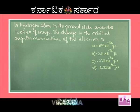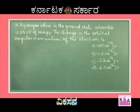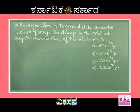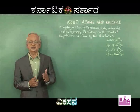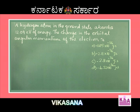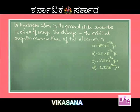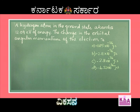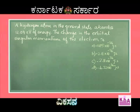Next problem: a hydrogen atom in the ground state absorbs 12.09 electron volts of energy. What is the change in the orbital angular momentum of the electron? The options are 1.05×10⁻³⁴, 2.11×10⁻³⁴, −2.11×10⁻³⁴, and 4.22×10⁻³⁴ joule-seconds. We need to determine what state the atom transitions to after absorbing this energy.